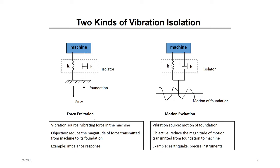The other type is the opposite: when we have motion of the foundation and the motion is transmitted to the machine, we want to isolate these vibrations also. An example of this is precise instruments in the lab. If you have a very precise instrument and you want to isolate any small motion coming from the floor — from your steps, for example — any vibration from the floor, you want to isolate it from going into the machine. So we want to design an isolator, which is a spring and damper. You want to design the spring and the damper in order to isolate this motion.